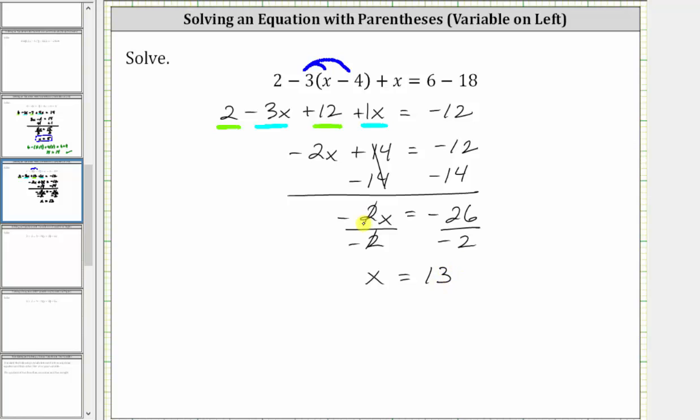The solution to the equation is x equals 13, which means if we substitute 13 for x back into the original equation, it will satisfy the equation or make the equation true. And let's go ahead and check this. Performing the substitution gives us two minus three times the quantity 13 minus four plus 13 equals six minus 18.